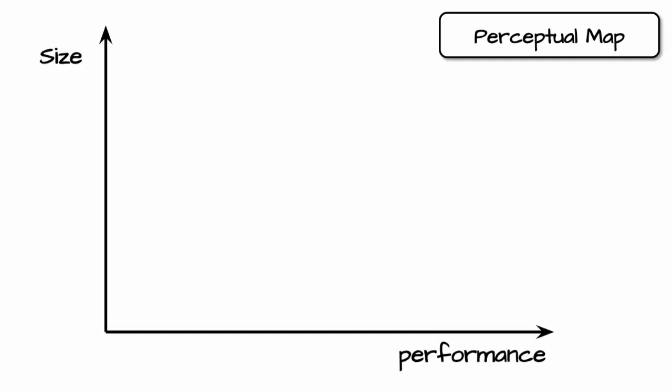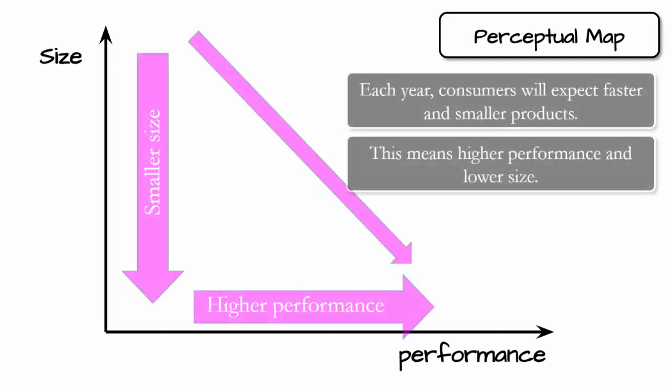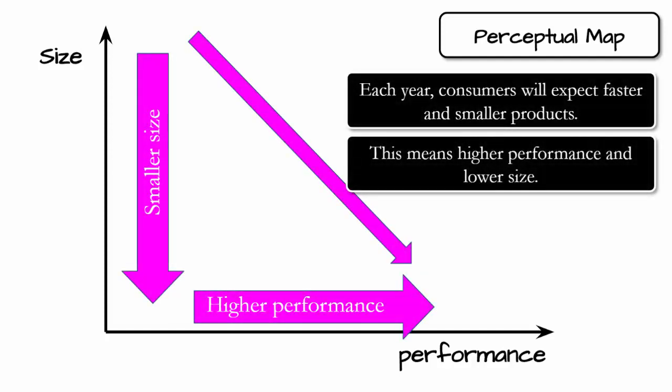Before we get started, let's remind ourselves of a few important characteristics of the simulation. This is our perceptual map — how customers are going to think about our products and how they are positioned. Size and performance are the two dimensions on the perceptual map. Each year, all consumers, independent of the market segment to which they belong, will expect faster and smaller products — higher performing and smaller products over time.